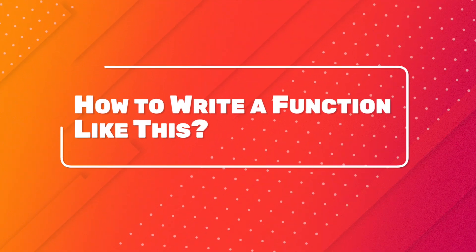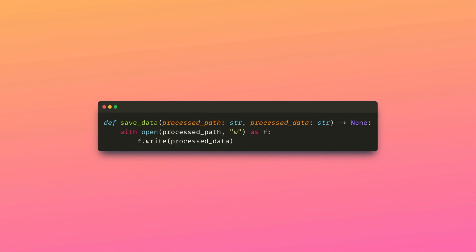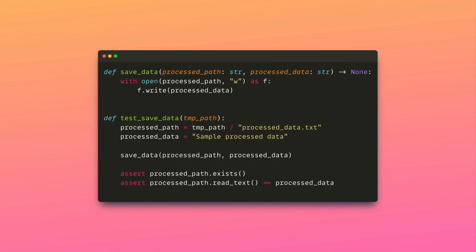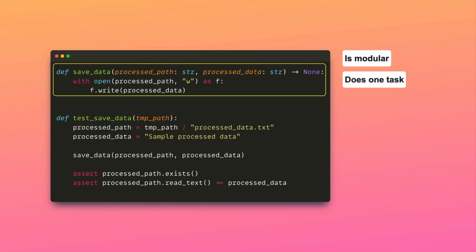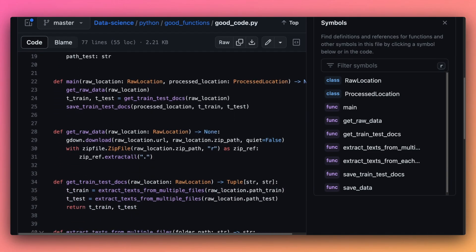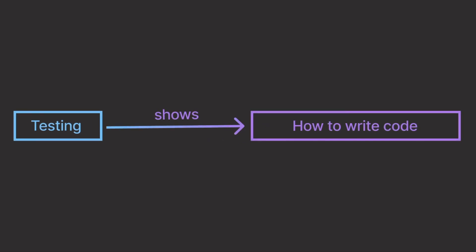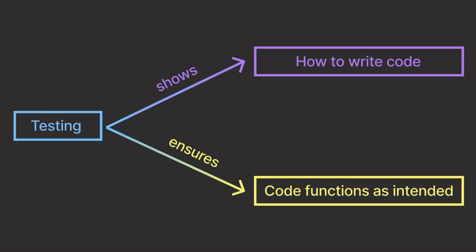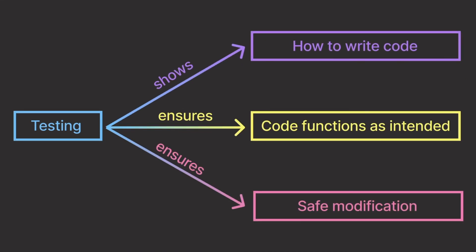You don't need to remember all these best practices when writing Python functions. An excellent indicator of a Python function's quality is its testability. If a function can be easily tested, it indicates that the function is modular, performs a single task, and has no code duplication. Testing not only provides valuable guidance for writing code but also ensures that the code functions as intended and enables safe modification of the existing code.